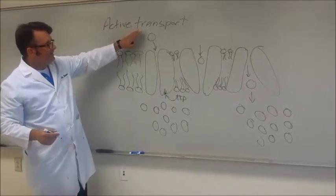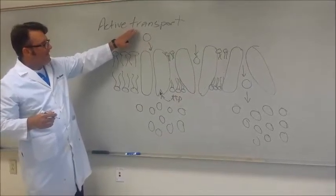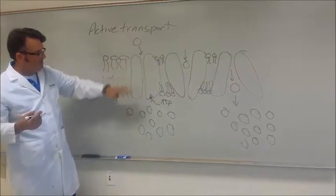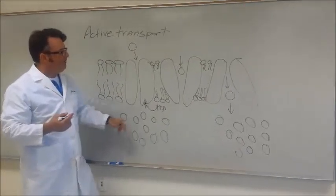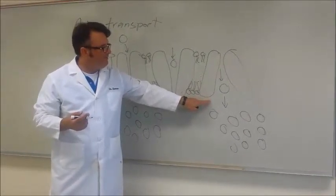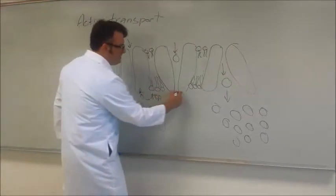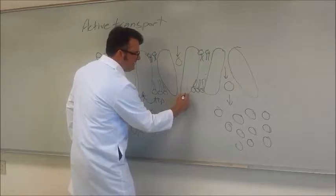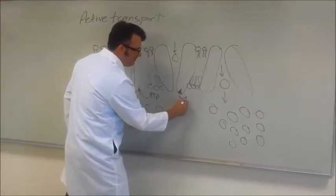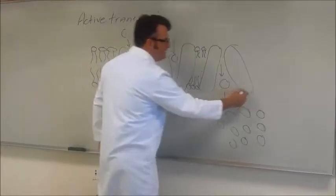And this allows for a chemical, in this case it might be potassium, to move from low to high concentration by the change of conformation of the membrane protein. How does it do it? Because ATP fired it up. ATP added this energy to provide for this conformational change.